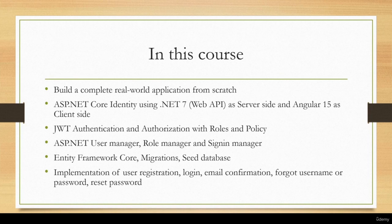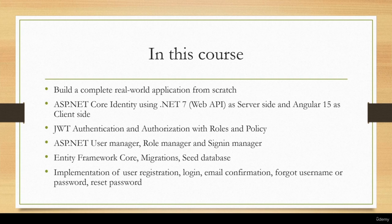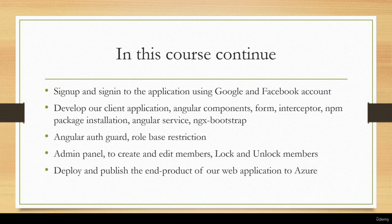In this course we are going to build a complete real-world application from scratch. We will be using ASP.NET Core Identity with .NET 7 Web API as the server side and Angular 15 as the client side. We are learning about JWT authentication and authorization with roles and policy, ASP.NET user manager, role manager, and sign-in manager, and making use of Entity Framework Core to create our database, apply migrations, and seed the database. We will do a full implementation of user registration, login, email confirmation, forgot username or password, and reset password.